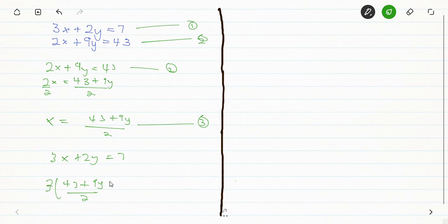Now I'm going to clear the fraction, that is the denominator 2. I multiply both sides by 2, so 3 bracket 43 minus 9y all over 2 multiplied by 2, and the fraction goes away.